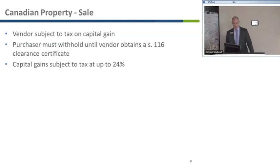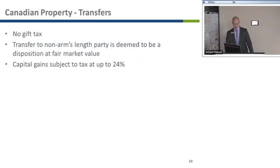On a sale of the property, the U.S. vendor is going to be subject to tax on the capital gain if there is a gain. The purchaser will have to withhold from the purchase price until the vendor obtains a clearance certificate from Canada Revenue Agency. For example, if your cost of the property is $500,000 and you sell for $900,000, your capital gain of $400,000 is subject to tax in Canada at a rate up to 24% — essentially half the capital gain is taxable at the high rate of tax, around 48–49% in Ontario.